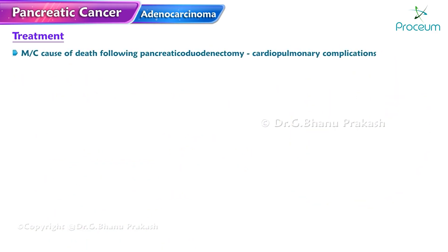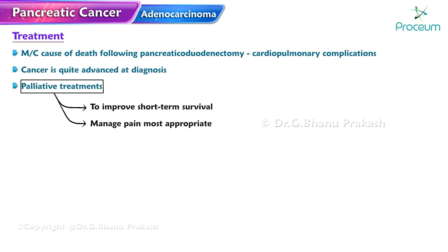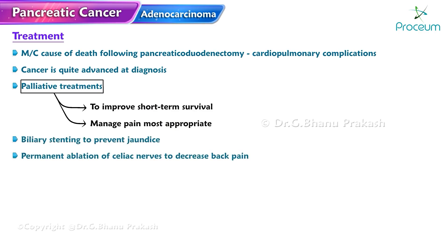The most common cause of death following pancreaticoduodenectomy is cardiopulmonary complications. In most cases the cancer is quite advanced at diagnosis, and palliative treatments to improve short-term survival and manage pain may be most appropriate. Options include biliary stenting to prevent jaundice and permanent ablation of the celiac nerves to decrease back pain.